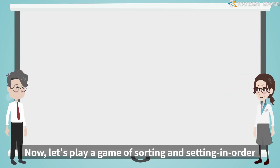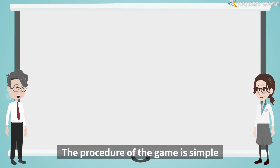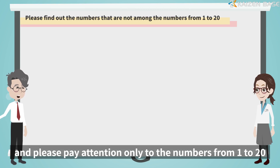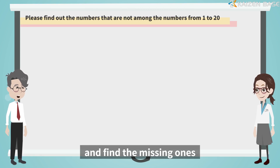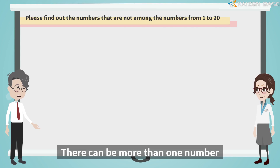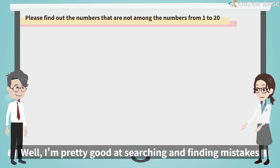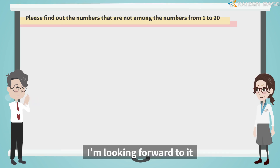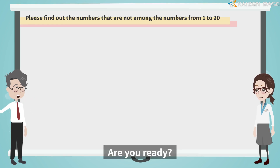Now let's play a game of sorting and setting in order. The procedure of the game is simple. Many numbers will be displayed, and please pay attention only to the numbers from 1 to 20 and find the missing ones. There can be more than one number. I'm pretty good at searching and finding mistakes — maybe I can find them right away. Are you ready? Let's get started.